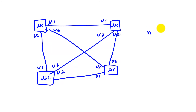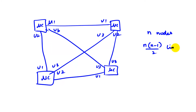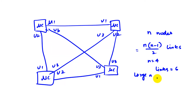Very soon we notice that if I have N nodes, and all of them have to be connected to each other, we will need N times (N-1) divided by 2 links. So if N is 4, there are 6 links. But for large N, this becomes impractical — it is an order N-squared problem.